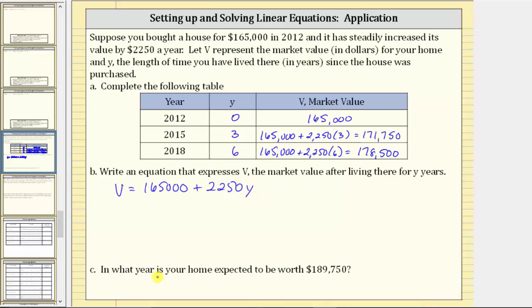And then finally for part C, in what year is your home expected to be worth $189,750? To answer this question, we use the equation for part B and substitute $189,750 for V. So let's go ahead and do that over here. Performing the substitution we have $189,750 equals $165,000 plus $2,250Y. And now if we solve this equation for Y, we can answer the question.